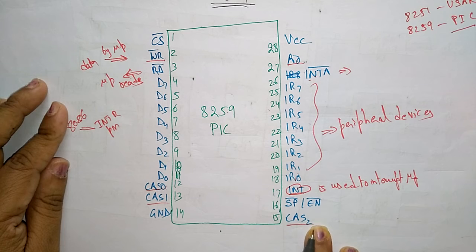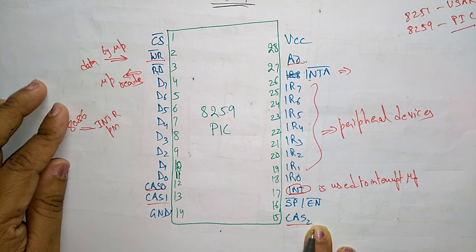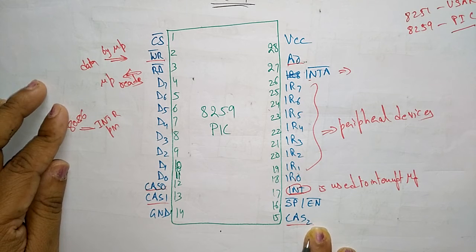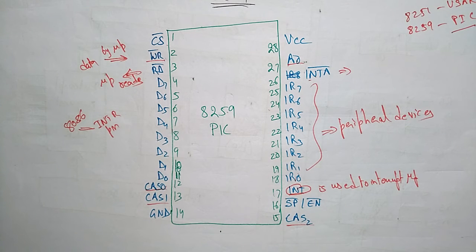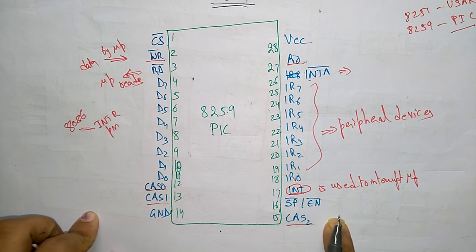These are the cascading signals to enable multiple 8259 chips to be chained together. Whenever multiple 8259 chips are there to be chained together, these pins will be enabled.